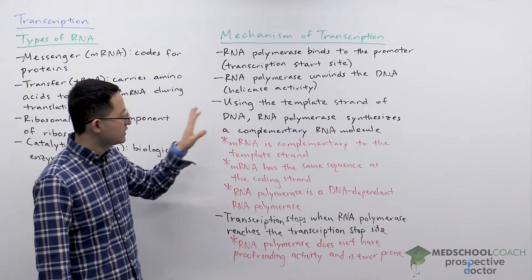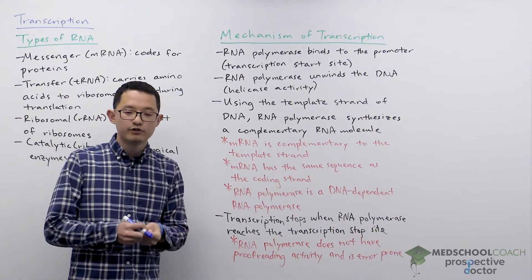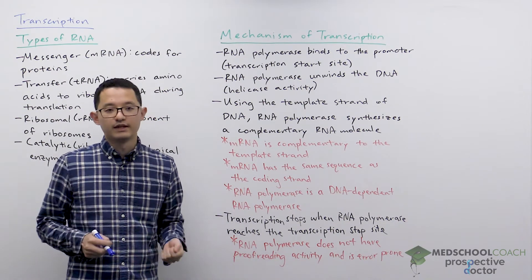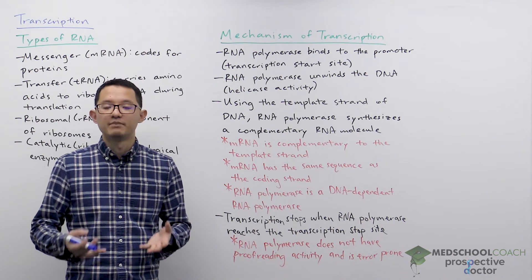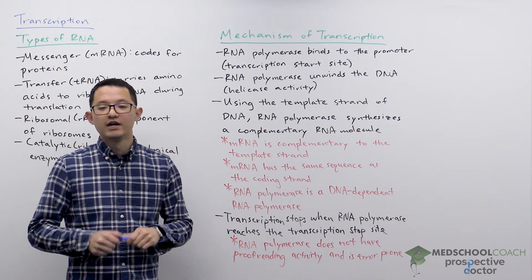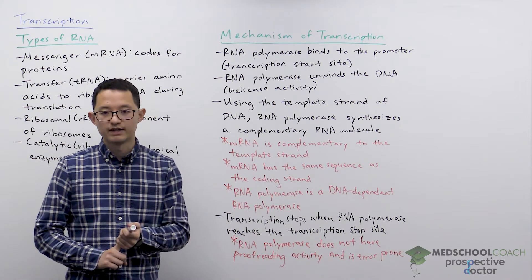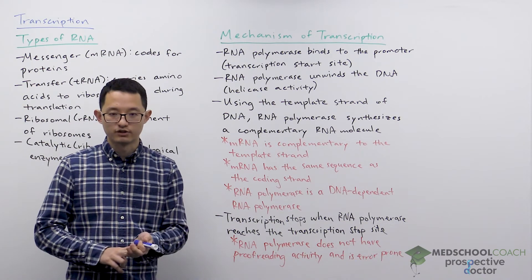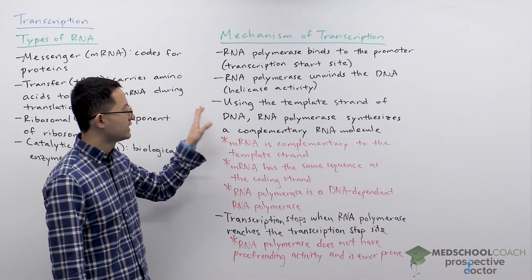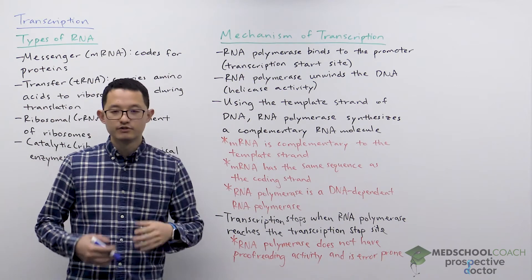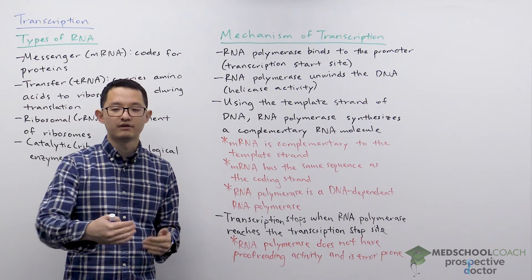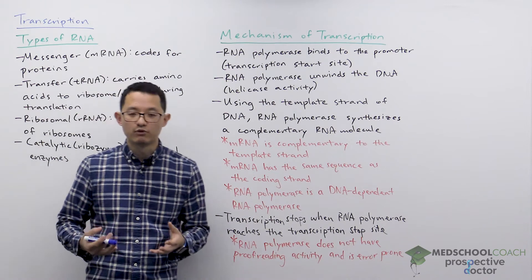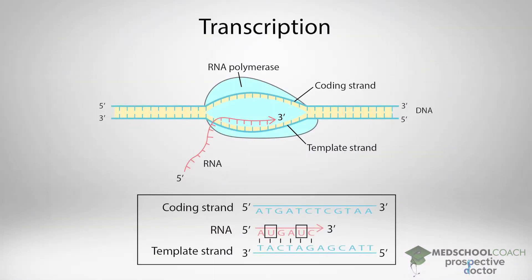Once the DNA is unwound, there are going to be two strands that have been separated. With transcription, it's important to note that one of these strands is called the template strand, and one is called the coding strand. RNA polymerase binds to the template strand and, using the template strand, creates a complementary RNA sequence. You can see how that works in the diagram — there's a template strand and a coding strand, and the RNA polymerase enzyme binds to the template strand to create the RNA molecule.